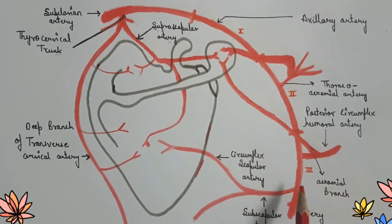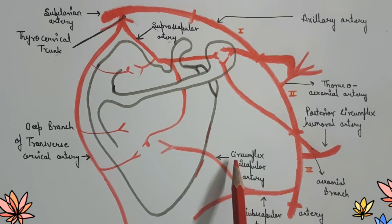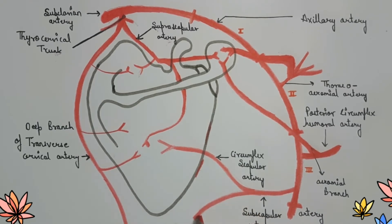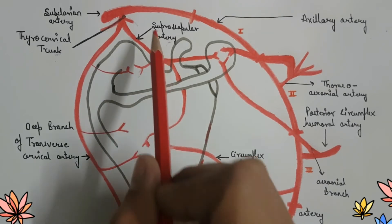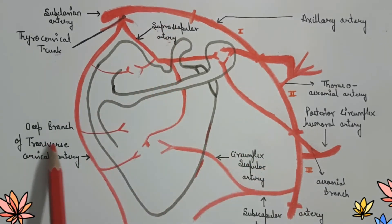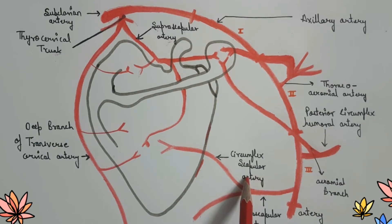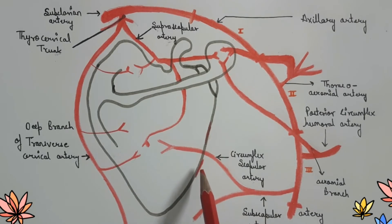Coming back to the axillary artery, the third part gives an important artery — the largest branch of the axillary artery — that is the subscapular artery. The circumflex scapular artery is given off by the subscapular artery, along with the thoracodorsal artery, though the thoracodorsal artery does not anastomose over the scapula. So the anastomosis over the body is formed by the suprascapular artery, the deep branch of the transverse cervical artery, and the circumflex scapular artery — which is the artery found between the two slips of the teres minor muscle.